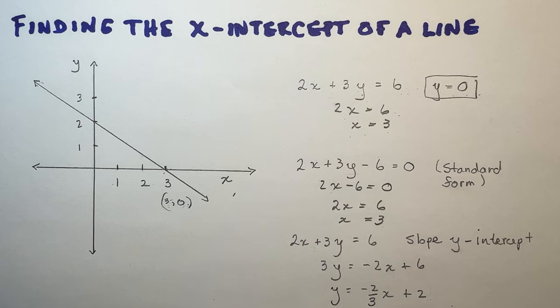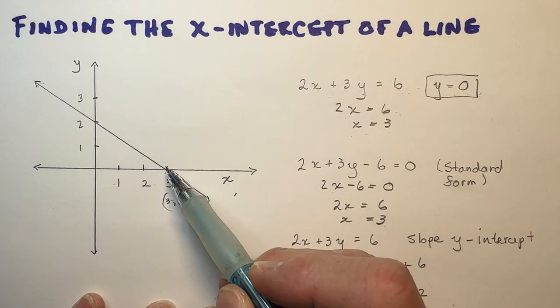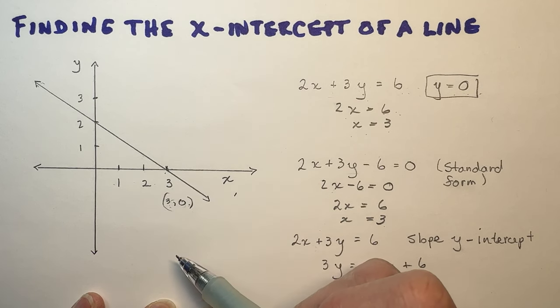Finding the x-intercept of a line is easy when you have a graph. It's quite obvious you can see the x-intercept is at this point here, 3, or (3, 0) for the coordinates.